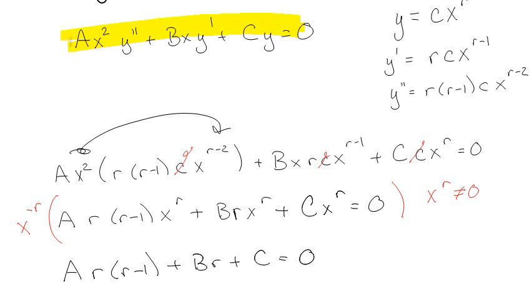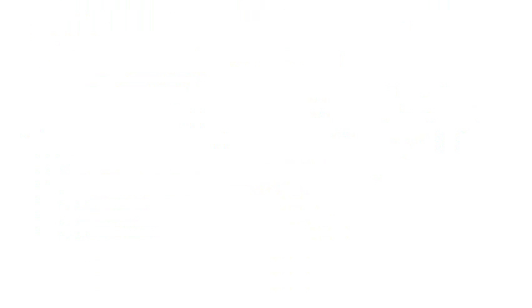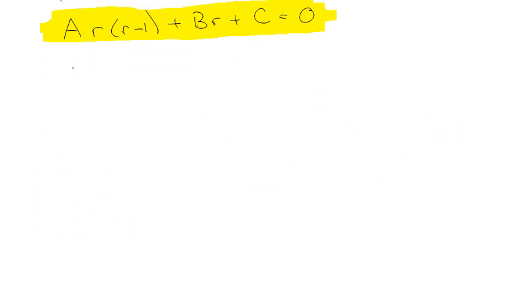So anytime you see anything in this form, you don't even have to make the guess anymore. You can just basically go straight from here right to here and then solve for your r's and get your answer. Now whenever you get these r's, obviously other things can happen. Let's just say I solve this out and I get something like ar squared plus br plus c equals 0.